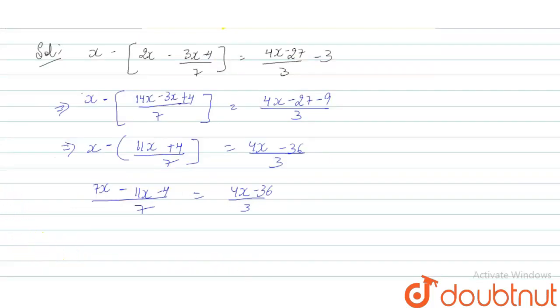Now we will take cross multiplication. So 3 times (7x minus 11x minus 4) equals 7 times (4x minus 36).